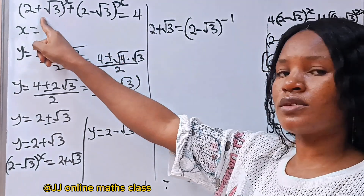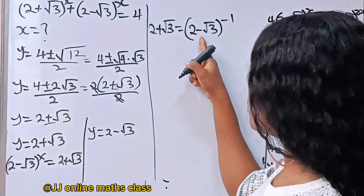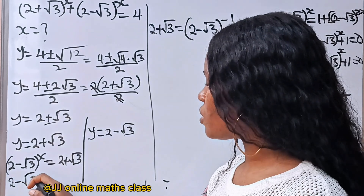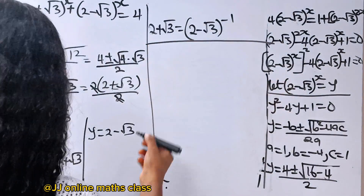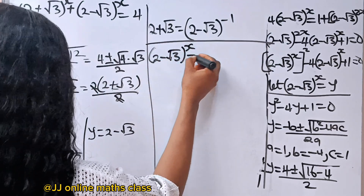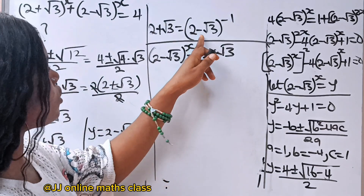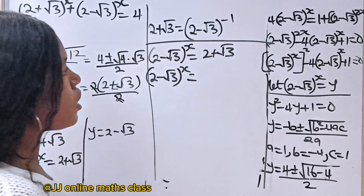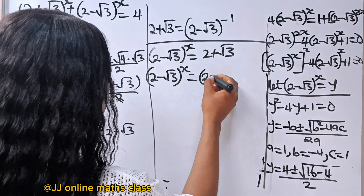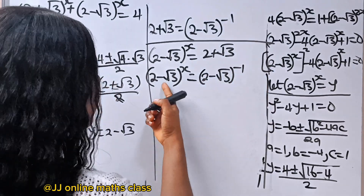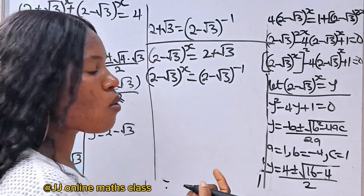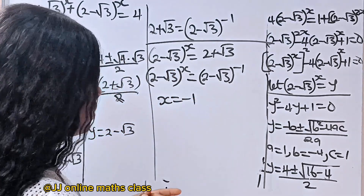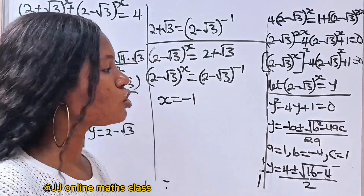Now we have the same base on both sides, which means the powers are equal. So x is equal to minus 1. That is the first value of x. Stay till the end because we are going to prove our solution.